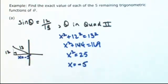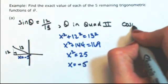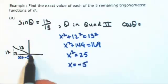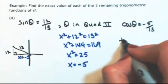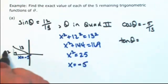Using this right triangle, now we can find the other five trig functions of theta. I already know sine. So then the cosine of theta, adjacent over hypotenuse, is negative 5 over 13. Tangent of theta is opposite over adjacent.